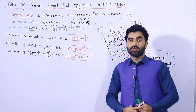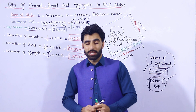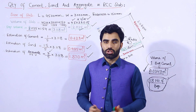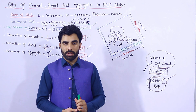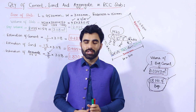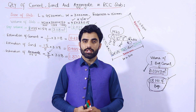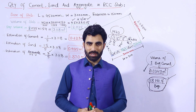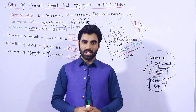So this is the topic for today: how to calculate the quantity of cement, sand, and aggregate for the construction of a slab with dimensions 3 × 4.5 meters and thickness 150 mm or 15 cm. I hope this short video can help you. Thanks for watching, see you in the next video. Goodbye.